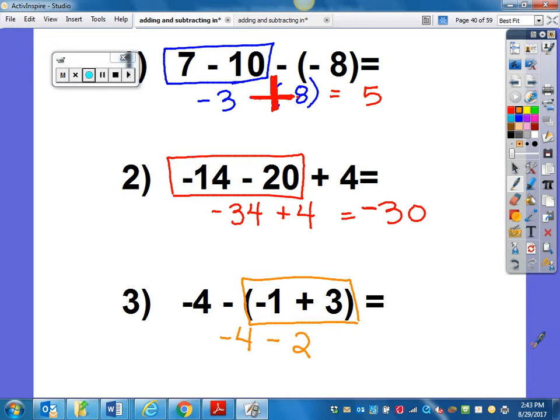So negative 1 plus 3 is 2 and I have negative 4 minus 2. So negative 4 minus 2 is a negative 6. It's the same sign, so I add and keep the sign.